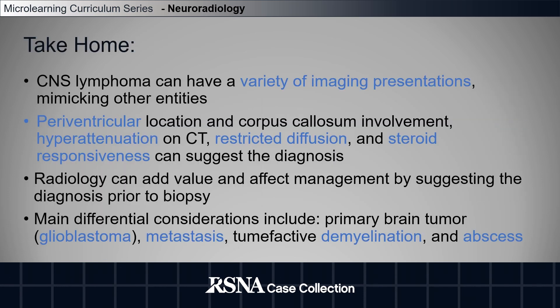In summary, CNS lymphoma can have a variety of imaging presentations mimicking other entities. Characteristic locations include periventricular location and corpus callosum involvement. Other characteristic features, including hyperattenuation on CT, restricted diffusion, and steroid responsiveness, can suggest the diagnosis of lymphoma. Radiology can add value and affect patient management by suggesting the diagnosis prior to biopsy.